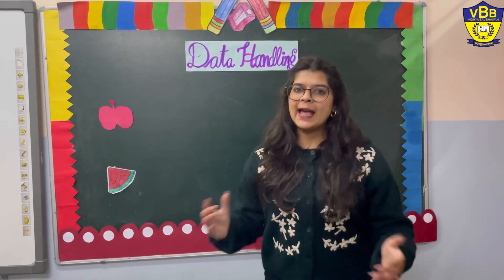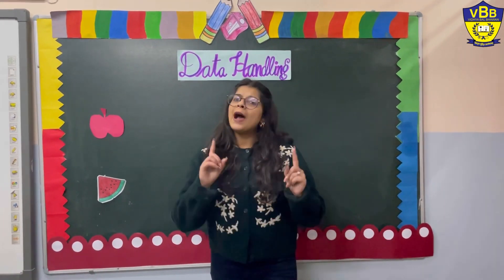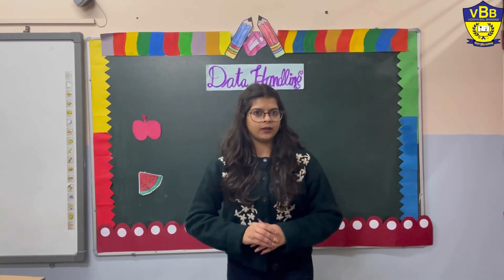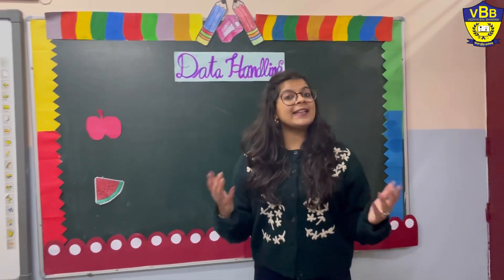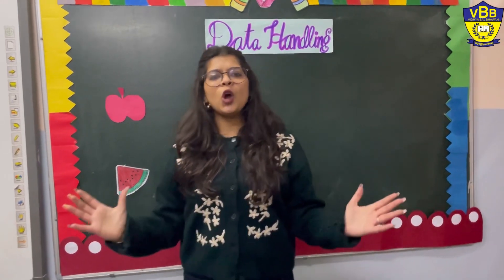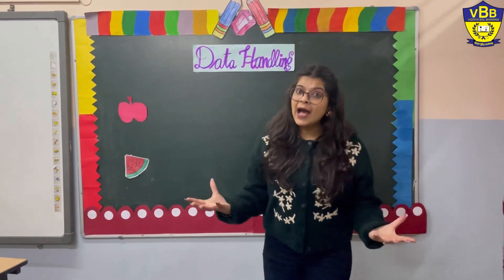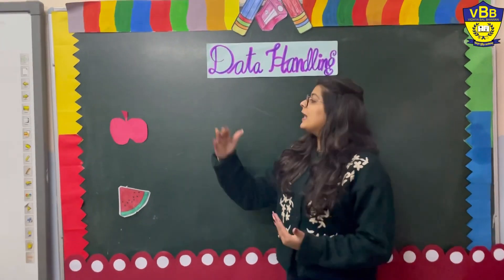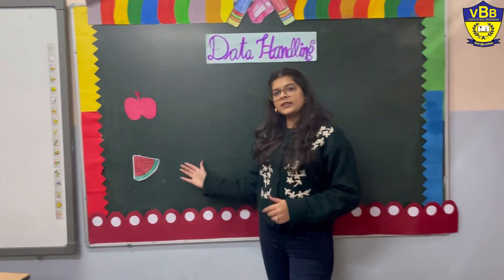I am giving you an example. I have an apple and a watermelon. I am asking you a question: how many kids in our class like to eat an apple and how many like a watermelon? I am going to show you a chart on the board to count how many kids like each fruit.